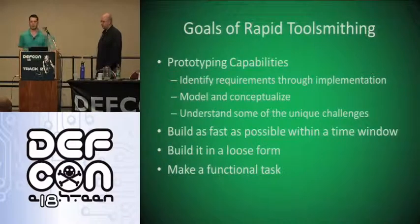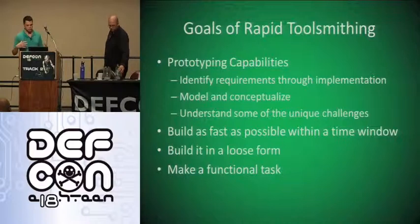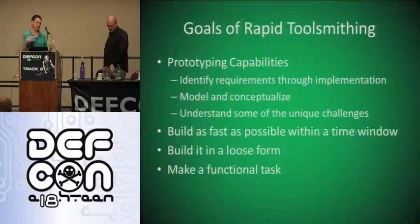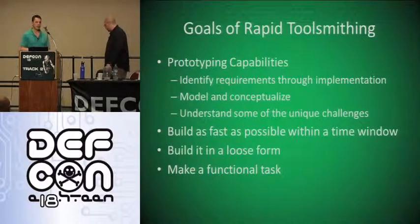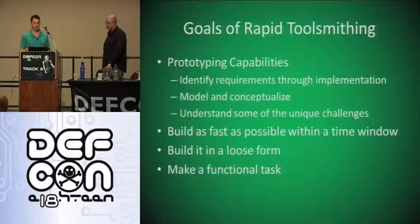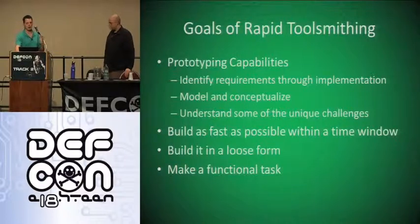We want to talk about rapid prototyping, especially in timebox windows. When we talk about toolsmithing, we're talking about prototyping capabilities — being on a timebox pen test and needing a tool that does X and Y, and modeling what you're trying to accomplish. You don't want to spend 16 hours when you only have a week for an engagement. The idea is to finish your script in four to five hours, get it working, and then apply it. Build something loose and open, improve it later, but the primary goal is always a specific functional task.